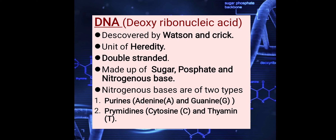DNA is the unit of heredity. Heredity means that DNA is the only thing which is transmitted from parents to their offspring. If we talk about the overall structure of DNA, there are three components: sugar, phosphate, and nitrogenous bases.